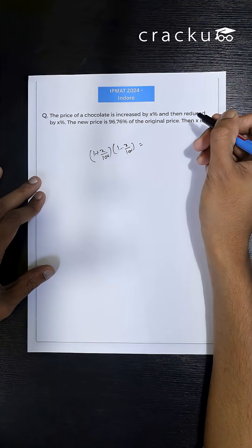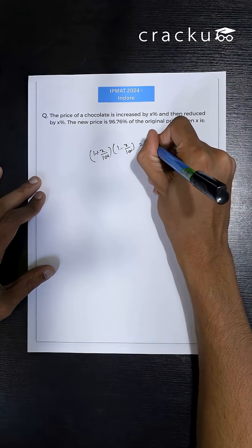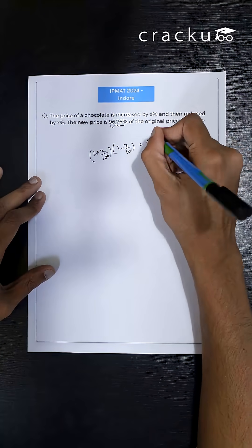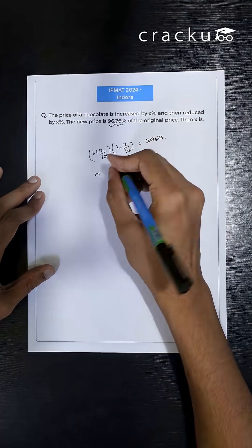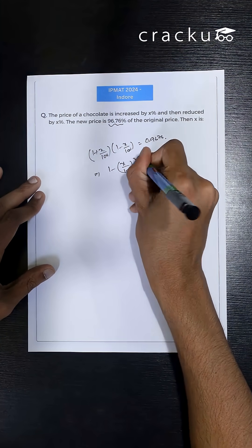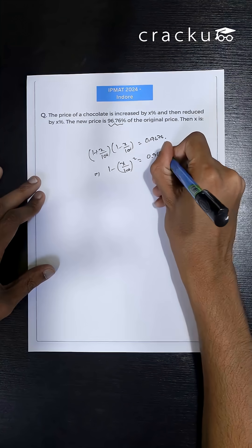This is given as 96.76 percent of the original price. So this 96.76 percent I can write as 0.9676. This thing I can write as 1 minus x by 100 square. This equals to 0.9676.